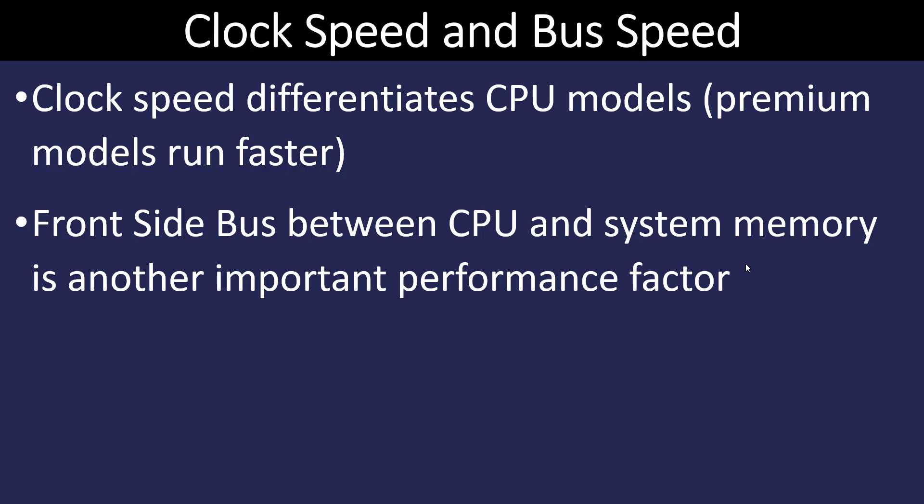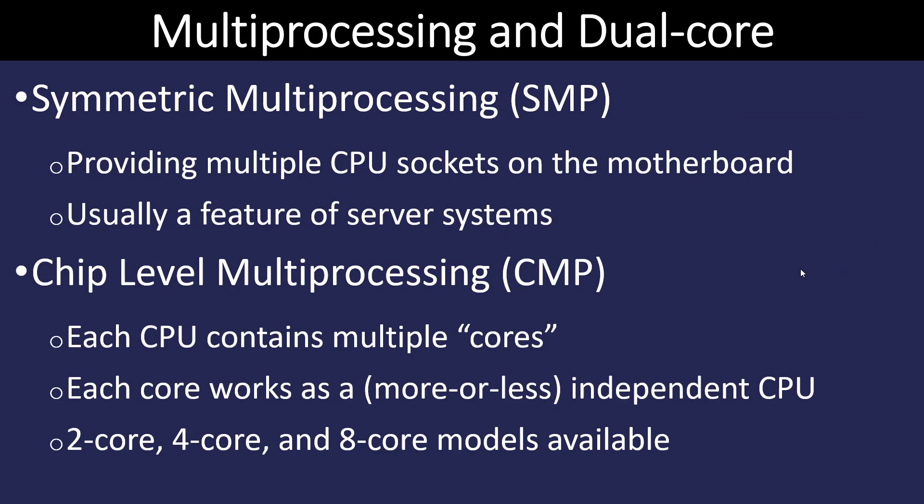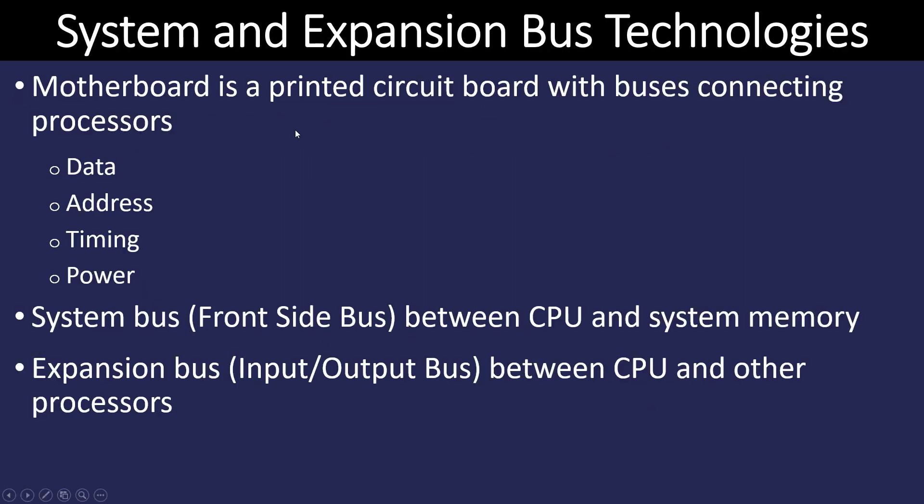The front-side bus speed is how fast information is transferred between the CPU and system memory. It's an important factor for performance, but they also have to match — your RAM front-side bus speed and your CPU front-side bus speed must match up in order for them to work together. When we talk about CPUs, you'll often hear the term that they have more than one core, which is a way to improve performance. One physical die can have multiple execution units: sometimes two, four, eight, or even 24 and 36 cores.